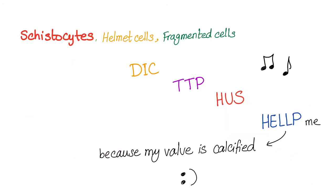Here is a song to remember all of this: Schistocytes, helmet cells, fragmented cells — DIC, TTP, HUS — help me, help you — why? Because my valve is calcified. These are all the causes: here is microangiopathic and here is the macroangiopathic.